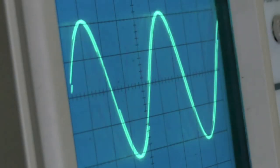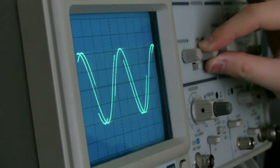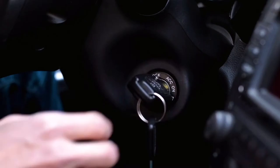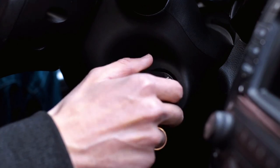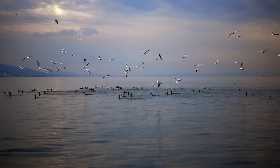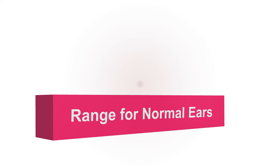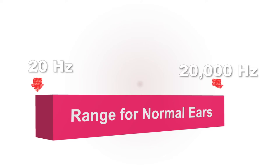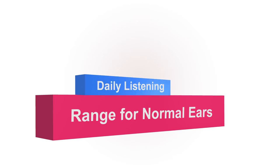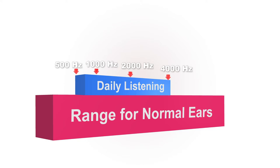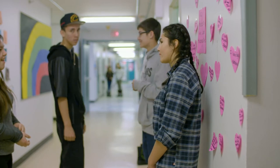Frequency is a physical characteristic of sound. When listening to sound, we perceive changes in frequency as changes in pitch. The normal ear can perceive sounds from a very low pitch to a very high pitch. The frequency range for normal ears is 20 to 20,000 cycles per second, or hertz. The range of sounds for our daily listening needs is limited to frequencies of 500, 1000, 2000, and 4000 hertz, which are critical for hearing and understanding speech sounds. A student with a hearing loss in this frequency range has a distinct disadvantage compared to students with normal hearing.